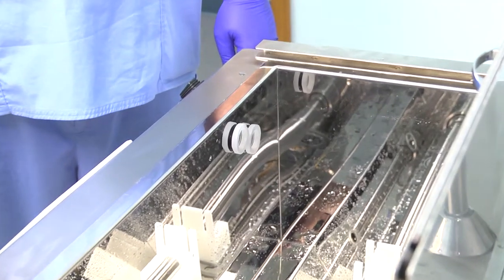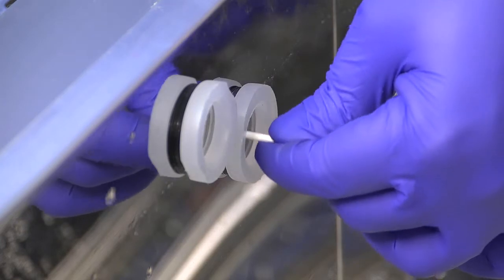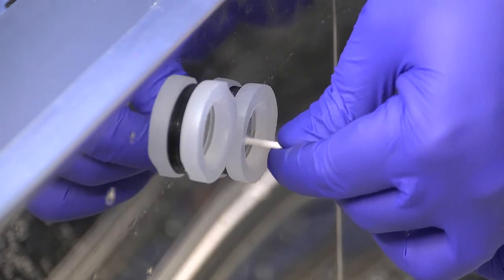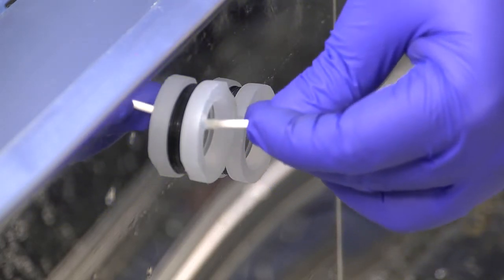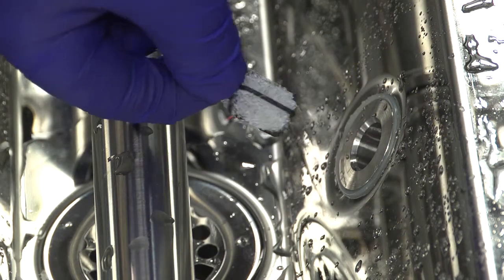At the end of each day, operators should clean the water level sensors inside the machine. Using a clean cotton swab, clean the primary level sensor and the overflow sensor. Also, the basin filter should be changed at least once per 8-hour shift.